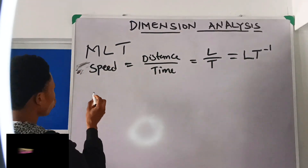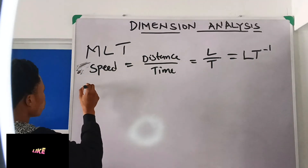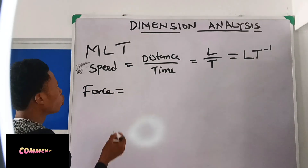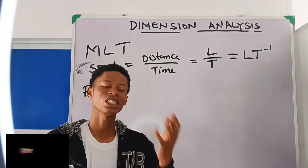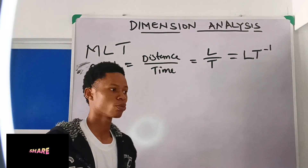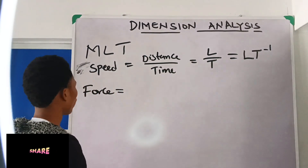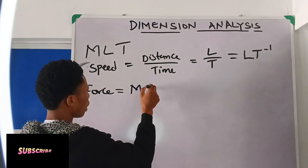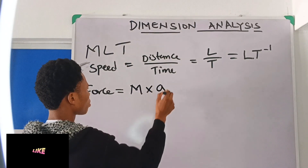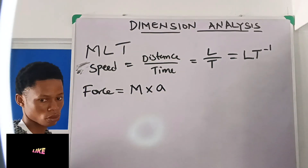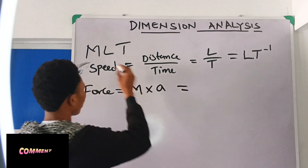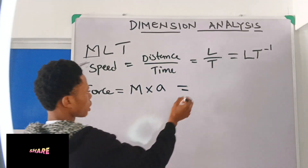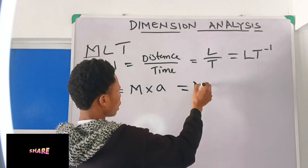If you are asked to find the dimension of force, what I told you is to know the formula. Force is mass times acceleration. Remember your MLT — M is mass, so I'm not doing anything to this mass, I will leave it as M times acceleration.